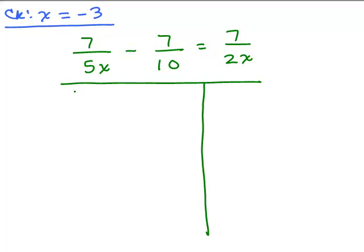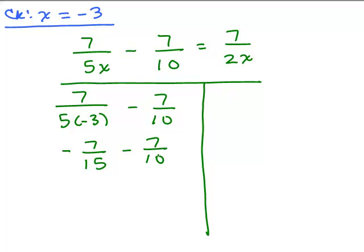We're going to check to see when I plug in negative 3 if both sides are the same. I'm going to plug in negative 3 everywhere there's an x. Then I'm going to simplify the left-hand side of the equation. So I have 7 over negative 15, so that's negative 7 fifteenths minus 7 tenths. I have to get a common denominator, and that would be 30.